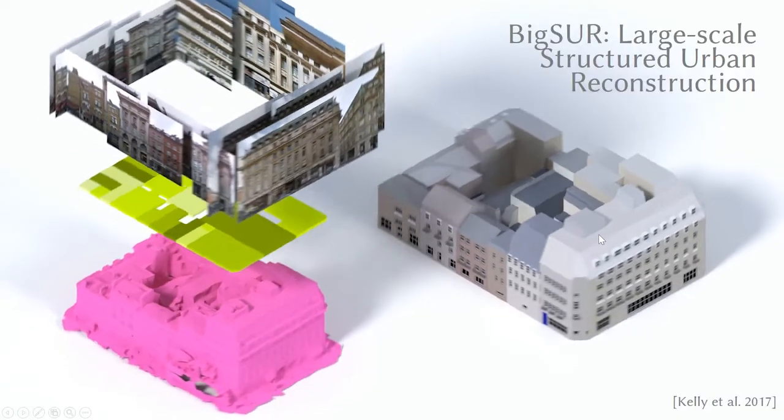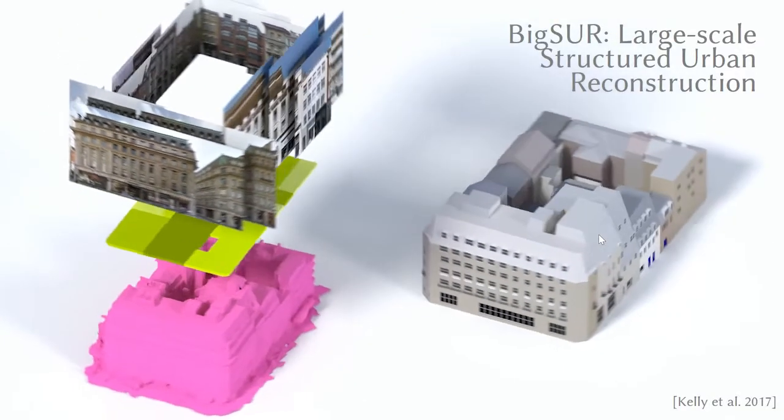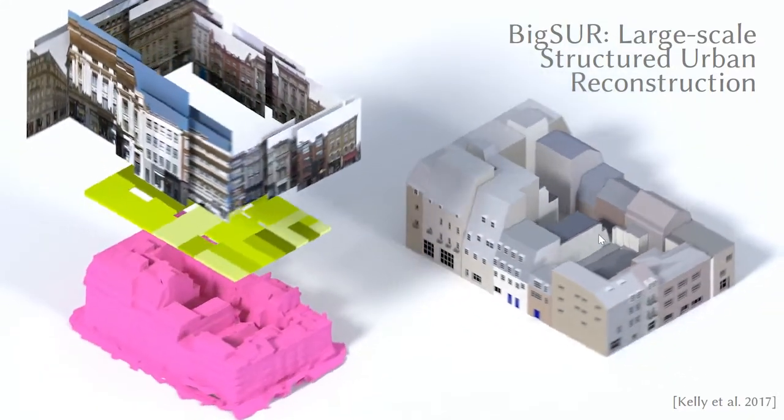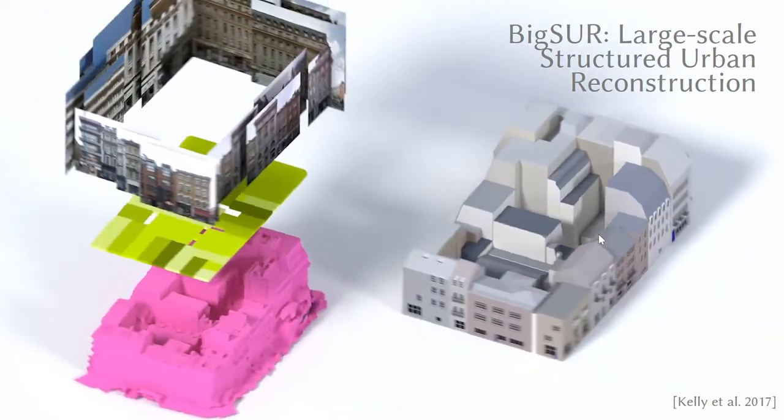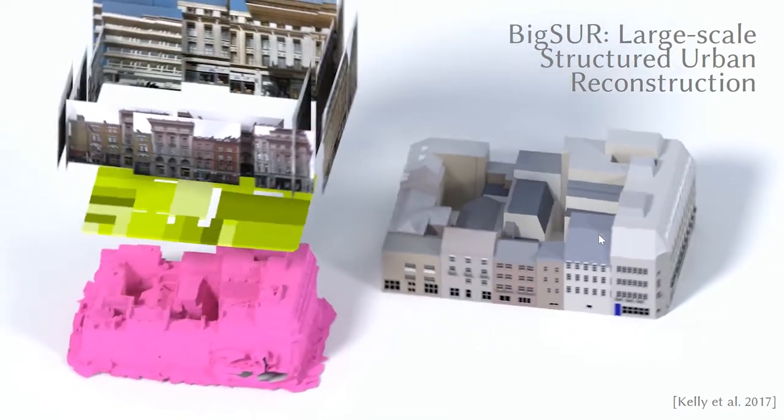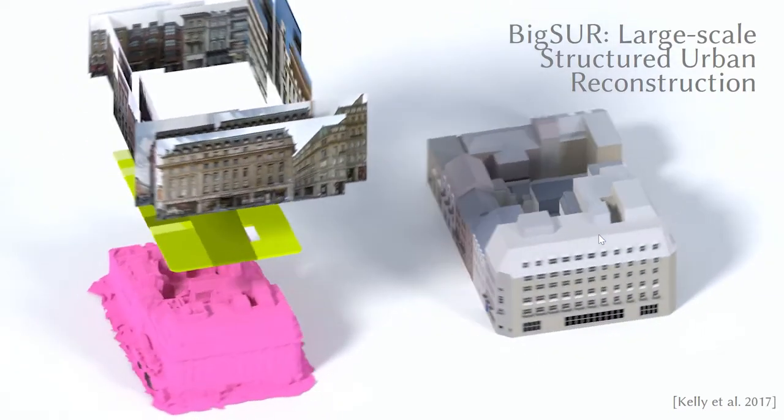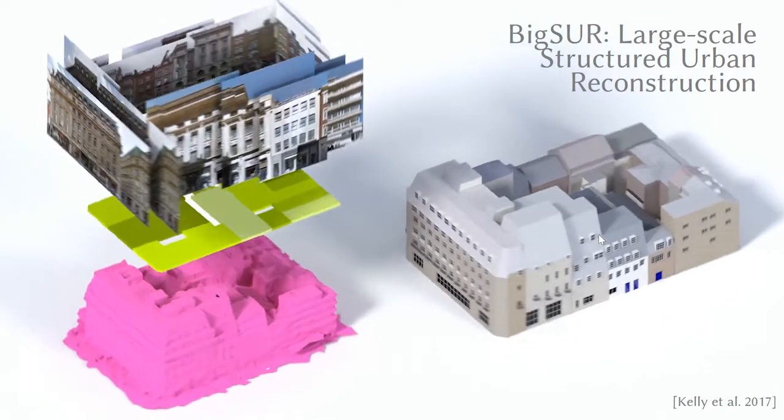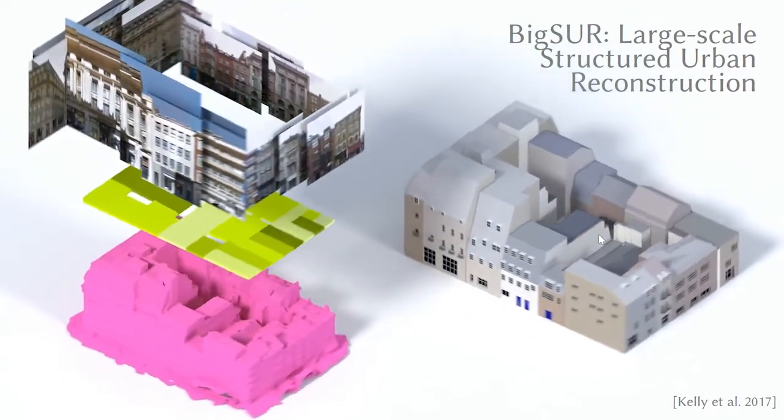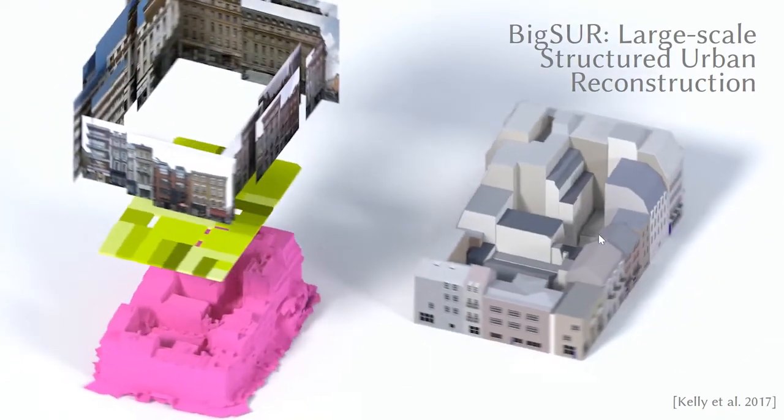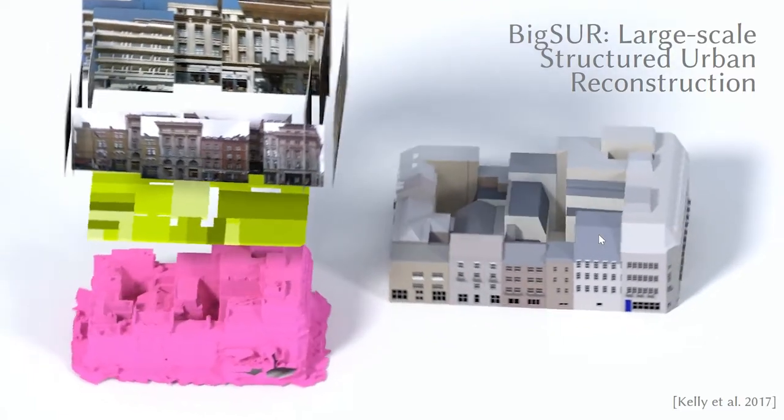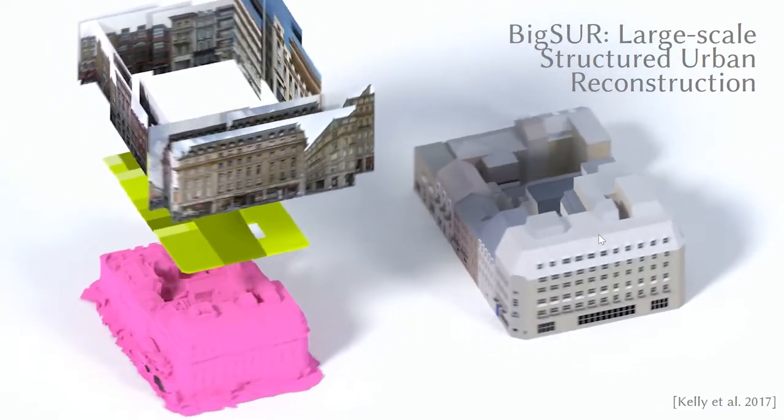So the first question we should ask ourselves is what was Big Sur? This was a project from last year where we created an urban data fusion platform that took photographs, GIS cartography mapping data and 3D meshes, here shown on the left, and created a clean architectural model from these data sources, here shown on the right.